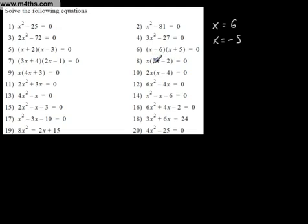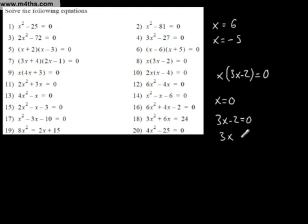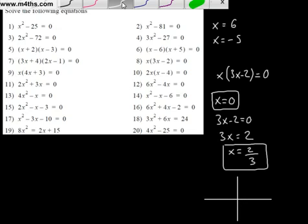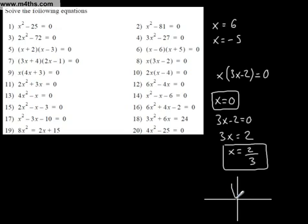This one is also already factored: x(3x - 2) = 0. This is simply saying either x = 0, or 3x - 2 = 0. So if x = 0, that's one solution. Or, solving the linear equation 3x - 2 = 0 gives x = 2/3. So we have two solutions: x = 0 or x = 2/3. To draw this, we get a parabola opening upwards, going through the origin (0, 0) and through the point (2/3, 0).